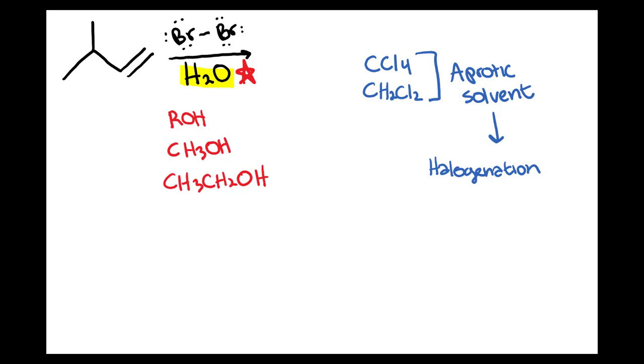If you're using an aprotic solvent instead such as CCl4 or CH2Cl2, you're doing an entirely different reaction known as halogenation. If you haven't checked out my video on halogenation, go ahead and check out that video before you watch this one because the two mechanisms are very similar to each other except at the very end. So understanding halogenation well will help you understand this reaction.